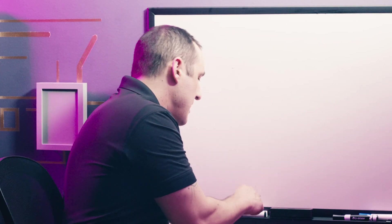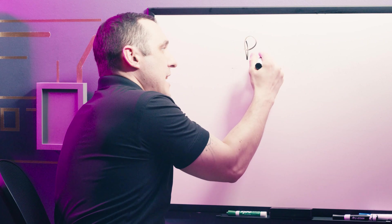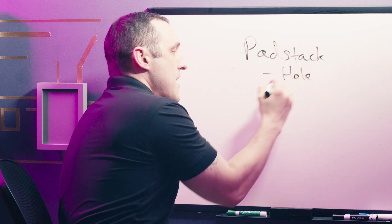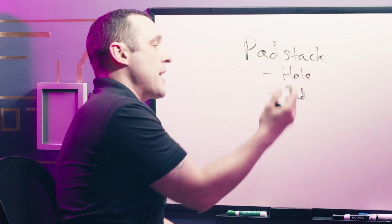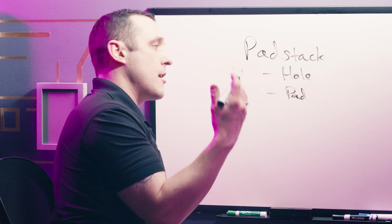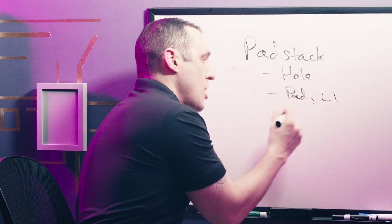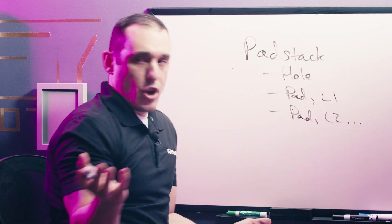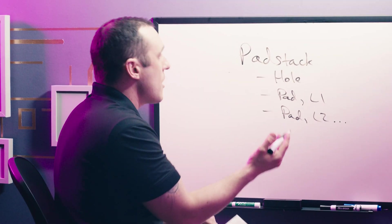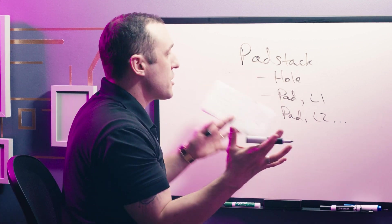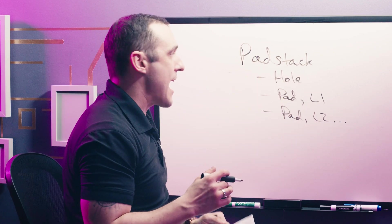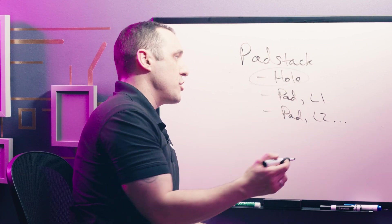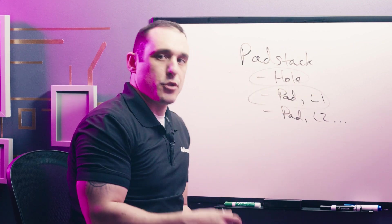In a pad stack you basically define a type, then you define a hole if it's present, and then you define a pad. With a through hole via or a plated through hole, you would have a pad definition on layer one, a pad definition on layer two, and so on. You have to define holes and pads together and then combine all of these to create a pad stack. For plated or non-plated through holes, you first define a hole, then select a pad and combine them.